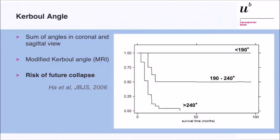If the combined angle is less than 190 degrees, all hips survived. If the angle is between 190 and 240 degrees, about 50 percent of hips showed collapse after two to three years. And those with an angle exceeding 240 degrees all eventually collapsed.